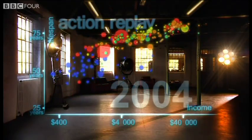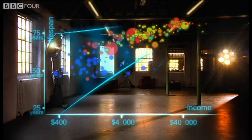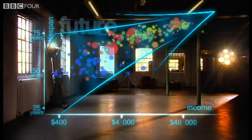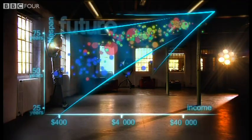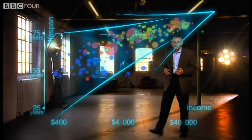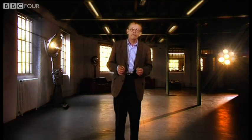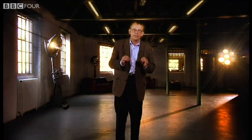We have become an entirely new, converging world. And I see a clear trend into the future — with aid, trade, green technology and peace, it's fully possible that everyone can make it to the healthy, wealthy corner. What you have seen in the last few minutes is a story of 200 countries shown over 200 years and beyond. It involved plotting of 120,000 numbers. Pretty neat, huh?